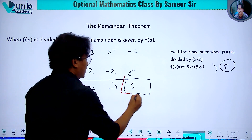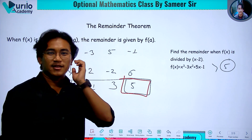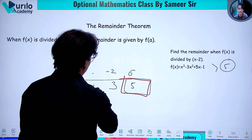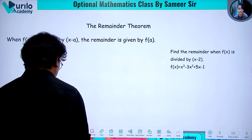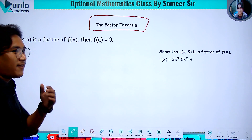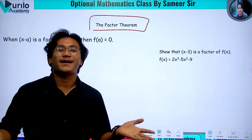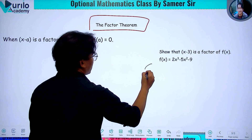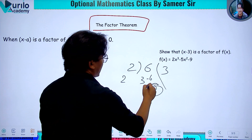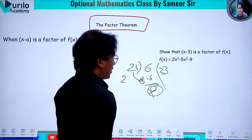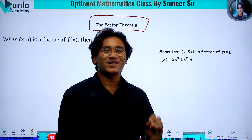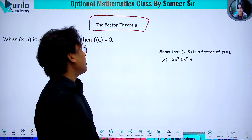So the Remainder theorem gives remainder 5. Now, for the Factor theorem: if the remainder is 0 when dividing f of x by (x minus a), then (x minus a) is a factor of f of x.